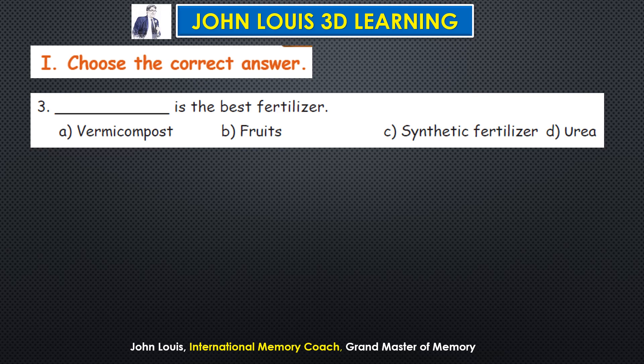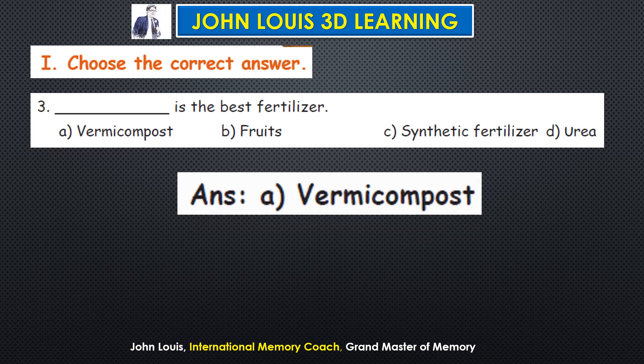Third question: dash is the best fertilizer. Options are vermicompost, fruits, synthetic fertilizer, and urea. Urea is a synthetic fertilizer. Fruits is not a fertilizer. Vermicompost, that is 'manpulu,' is the best fertilizer. The answer is A — vermicompost.